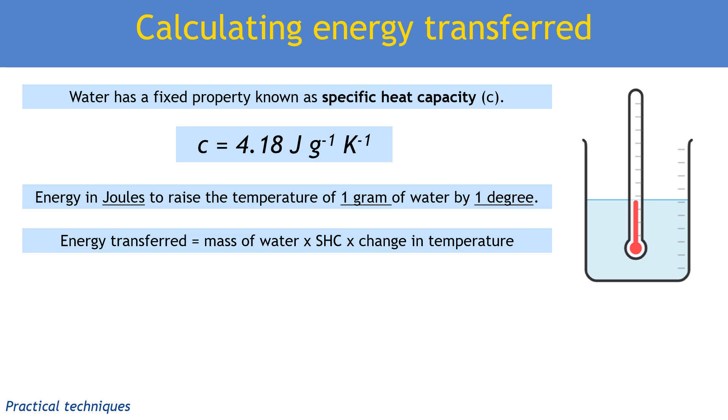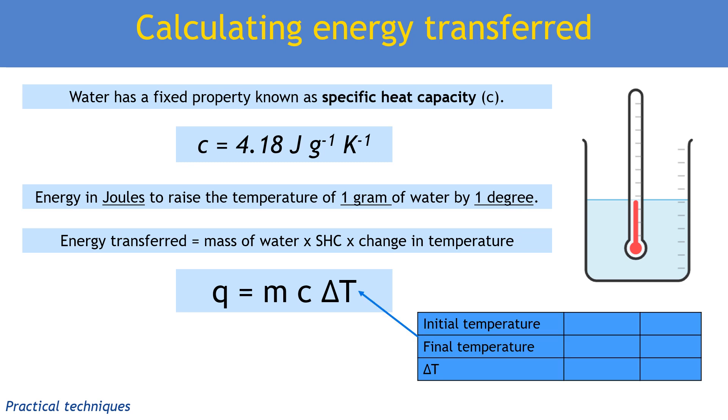Although the units of temperature in the specific heat capacity value are per degree kelvin, because we're measuring a temperature difference represented by delta T, we don't actually need to convert our values from degrees Celsius. If we had an experiment where the initial temperature read 20 degrees and final was 40 degrees, the difference is 20 degrees. If we converted to kelvin, the difference would still be 20, so it makes no difference to our calculation of energy transferred.